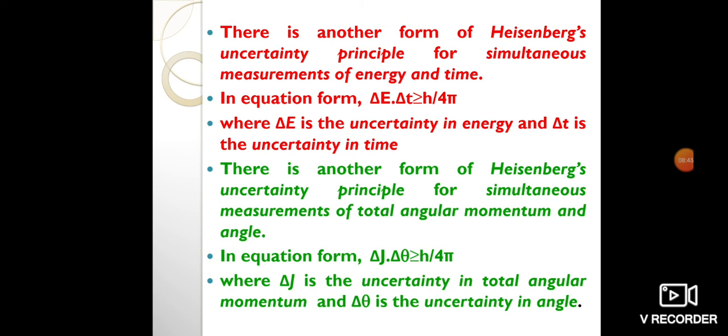To measure the position and momentum of an electron, shine light on the electron and detect reflected light using a microscope. Minimum uncertainty in position is given by the wavelength of the light. So, to determine the position accurately, it is necessary to use light with a short wavelength.